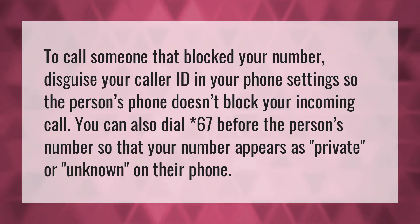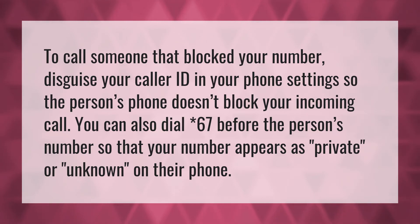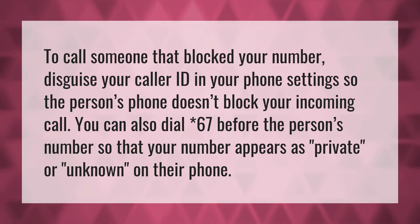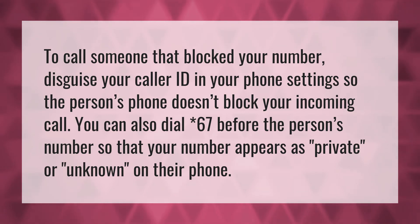To call someone that blocked your number, disguise your caller ID in your phone settings so the person's phone doesn't block your incoming call. You can also dial asterisk 67 before the person's number so that your number appears as private or unknown on their phone.